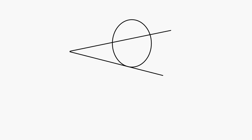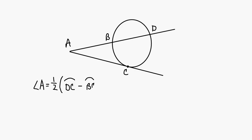Now you're going to get a circle with a tangent and a secant that intersect outside the circle. The rule is the same. Angle A is going to be equal to one half times the big arc, arc DC, minus the smaller arc, arc BC. This angle is equal to one half of the red arc minus the blue arc.